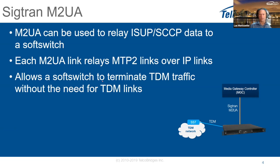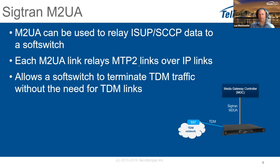M2UA can be used to relay messaging data to a soft switch. Each M2UA link relays MTP2 links over IP. The MTP2 links exist on TDM, either at 64 kbps or 56 kbps. These encapsulate all signaling information inside a specific envelope so that it can be extracted from the 64 kbps streams. The data is extracted from those streams and then rebuilt into IP.